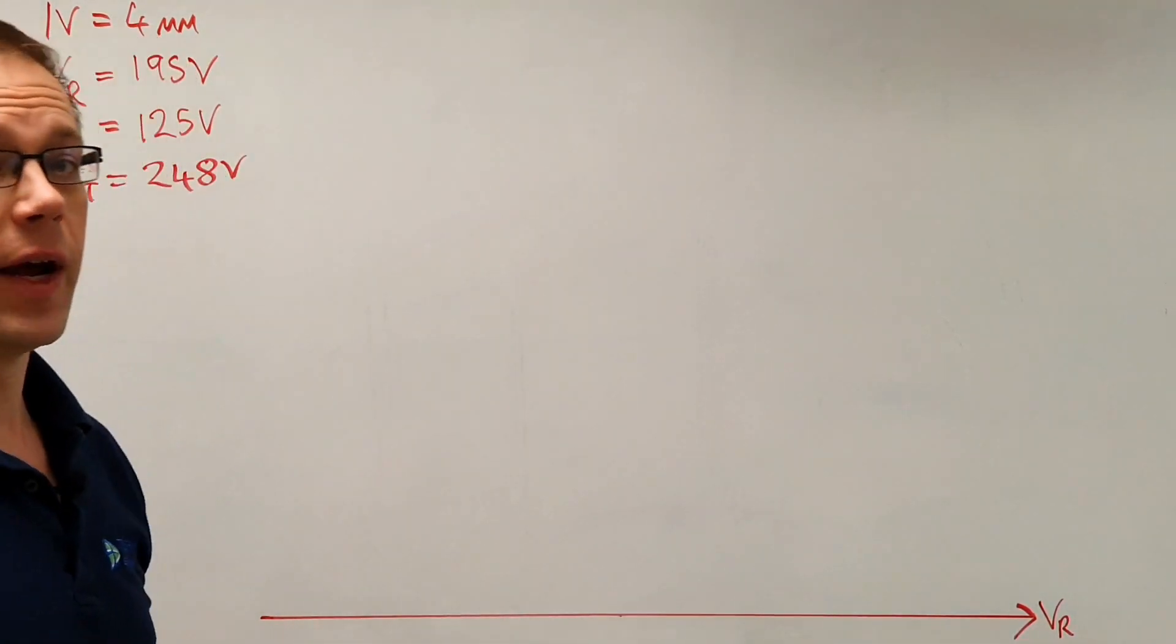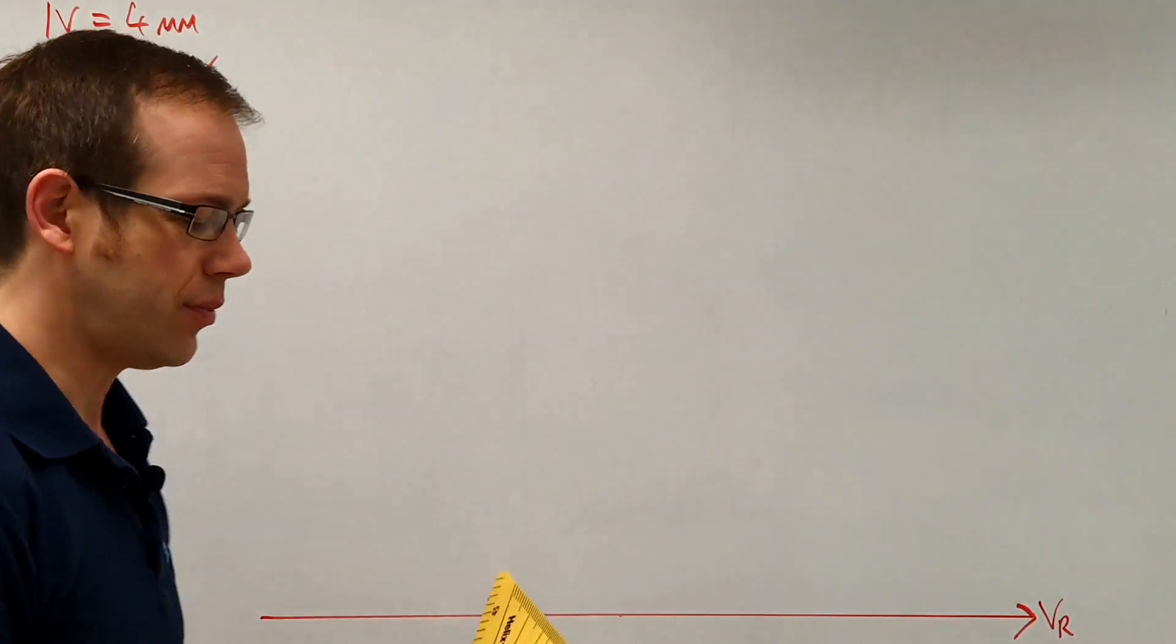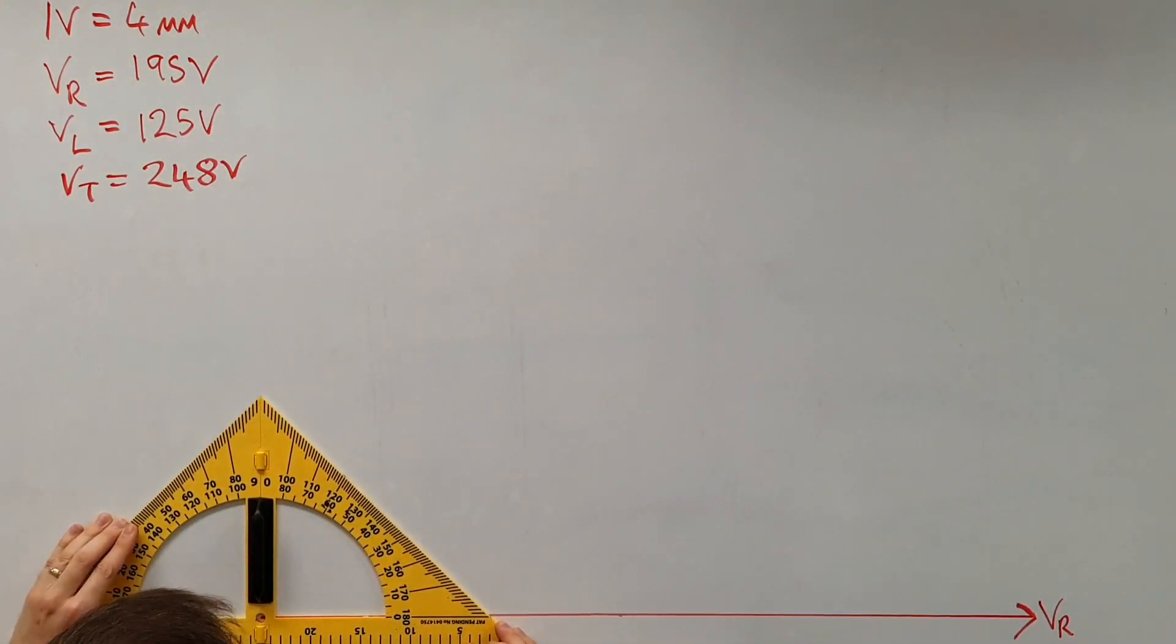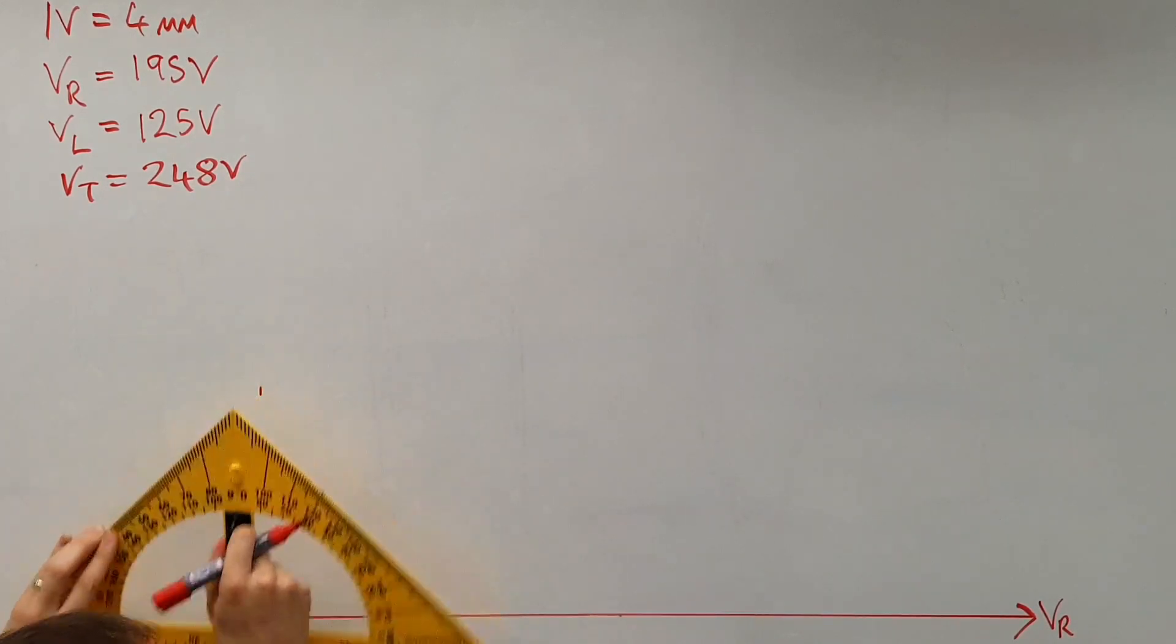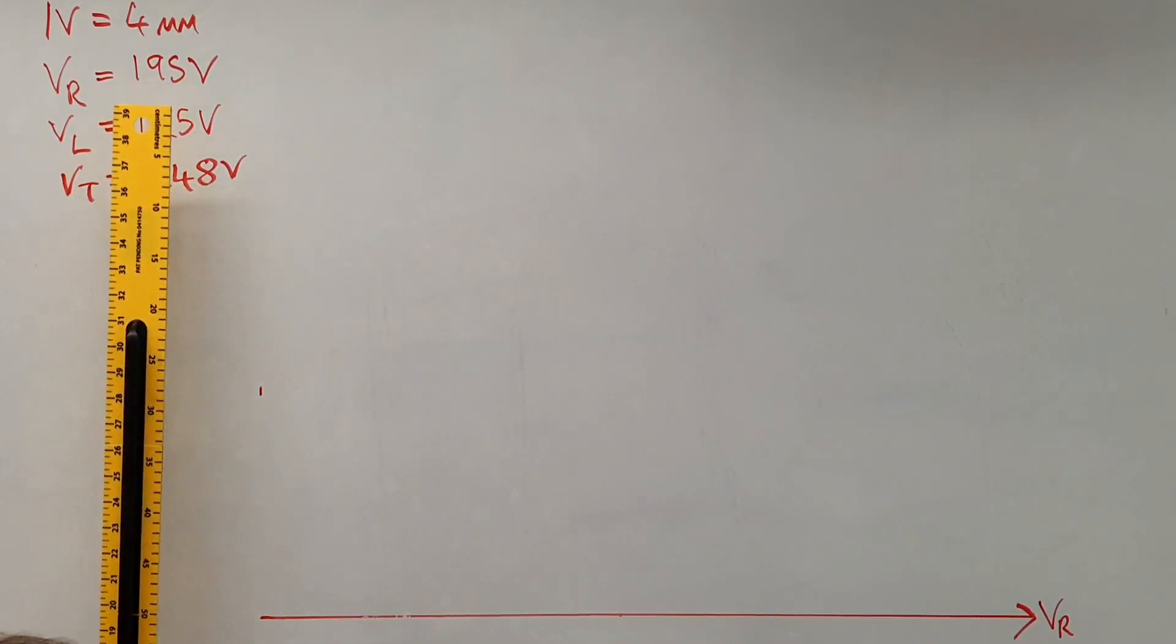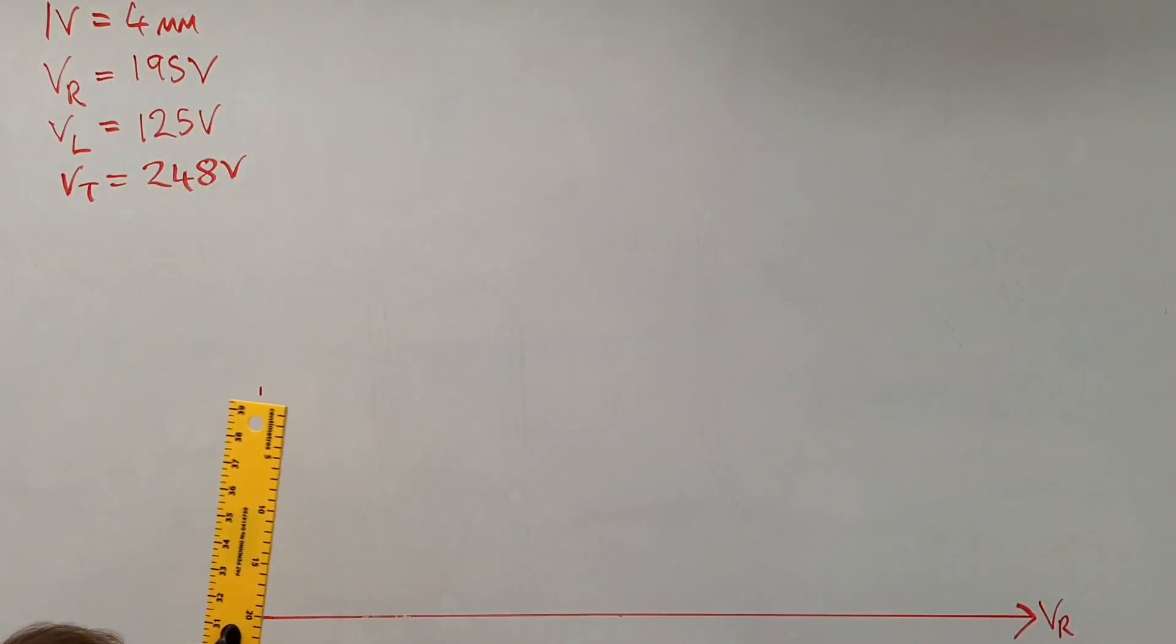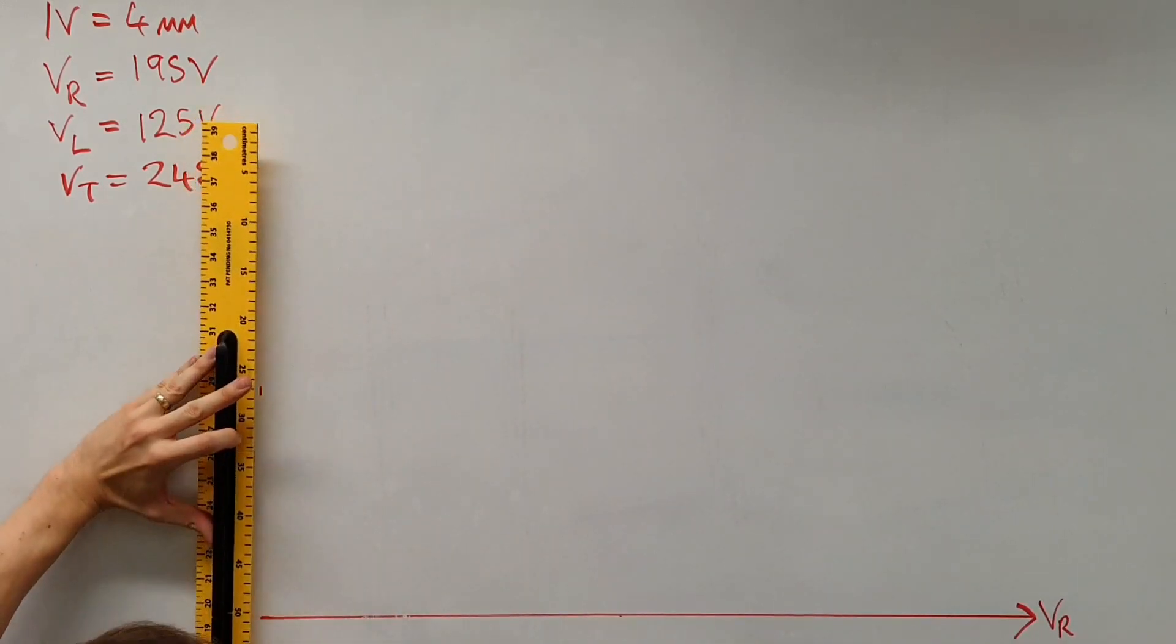What we're going to do now is figure out where our inductive voltage is going to go. In order to do that I'm going to draw a line coming off here at 90 degrees so I'm going to get my protractor here and I'm going to draw a line coming up this way at 90 degrees. That line will also want to work to the same scale so we are looking at the inductive voltage which is 125 volts. 125 times by 4 is going to give me 500 millimeters so that's 50 centimeters.